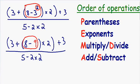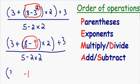Inside of our parentheses we don't have any exponents, so we can skip our second order of operations. We don't have any multiplication or division, so we can skip our third order of operations. We can move on to our last order of operation, which is adding and subtracting. So we can do eight minus nine. Eight minus nine is equal to negative one, and the rest of our expression stays exactly the same. We have three plus negative one times two, close the parentheses, plus three.